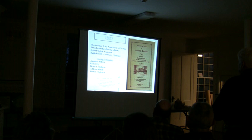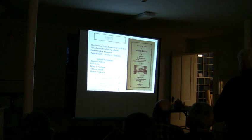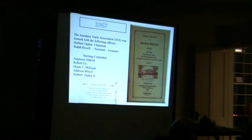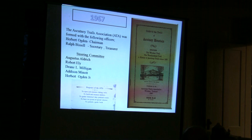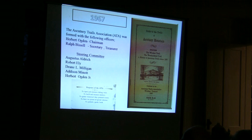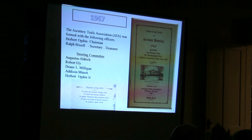1967 is when the Ascutney Trail Association started. It was Herb Ogden Sr. who got this going. Ralph Bissell was the treasurer. Ralph is still alive and celebrating his 100th birthday — we'll see a little video of that. Gus Aldrich was very active, as was Herb Ogden Jr. I also saw Robert Ely in a picture, and I remember Dean Milligan, who worked at Jones and later Bryant. He's still alive and lives up in Guilford, and has a mill site with a dam.